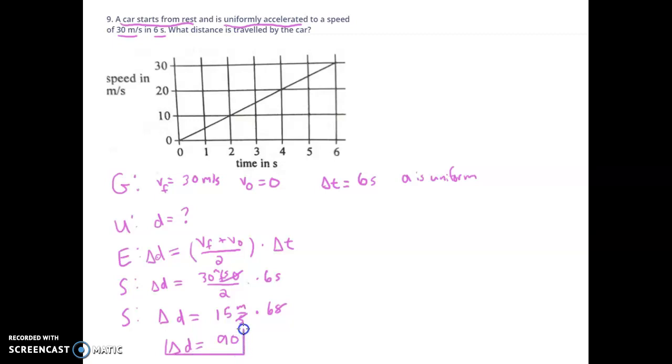And 15 times 6 is 90. Okay, and oops, I almost forgot units. We were left with meters. 90 meters. Okay, so that was one way to solve this question. Using our GUESS method, arriving at our equation, substituting and solving. There is another way.